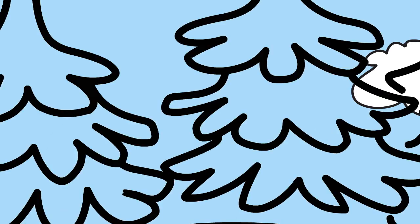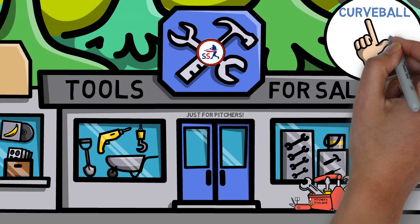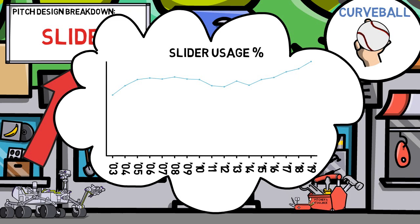In a couple of previous videos, we've begun to dive deeper into what key characteristics can improve a pitcher's arsenal, specifically with the fastball and curveball. We've done this through the lens of utilizing today's latest pitch design technology, and today's video is going to be no different. We'll be taking a look at the slider — a pitch whose usage has nearly doubled in the last two decades. Why is that, and how can I maximize the output of this pitch?